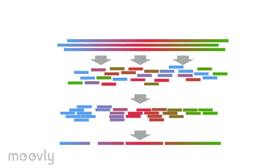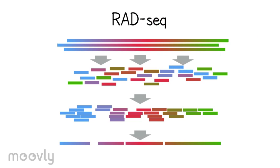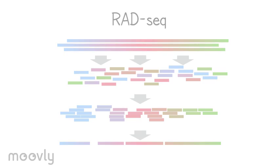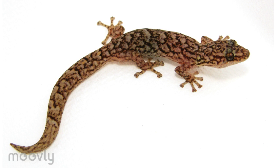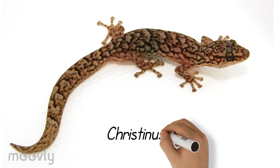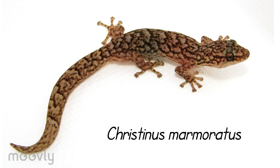Fortunately, new techniques involving restriction-site-associated DNA sequencing, also known as RAD-seq, and bioinformatics have allowed researchers to begin studying these homomorphic systems. For my project, I am trying to determine the sex chromosome system of an adorable marbled gecko from southern Australia known as Christinus marmoratus.